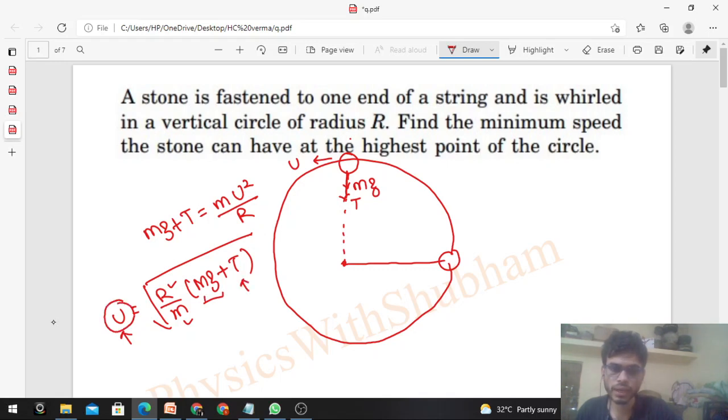We know that tension is always greater than or equal to zero. So the minimum tension will be zero. So you can find out the u minimum. Minimum speed will be square root of r by m into mg, which comes out to be square root of rg. So this is how you can calculate it.